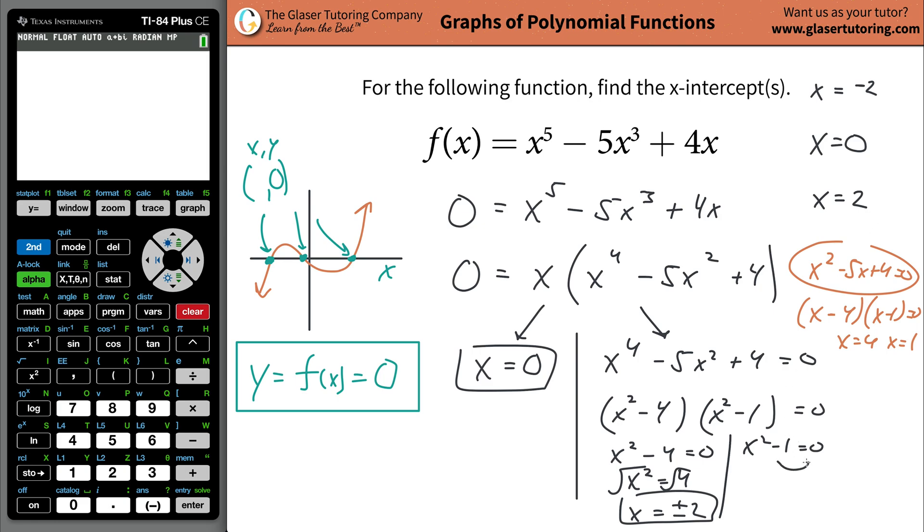So now you have now two other x intercepts, you have x being equal to negative two, and you also have x being equal to positive two. Now the same thing over here, add the one to the right hand side, so you get x squared being equal to one. When you square root both sides, now you're going to get x is equal to plus or minus one. In other words, you got two more, so x is going to be equal to negative one, and x will be equal to now positive one.